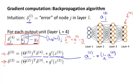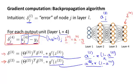Next, you apply a similar formula to compute delta two, which can be computed using a similar formula, only now using a2. It's possible to prove if you know calculus that this expression is equal to mathematically the derivative of the activation function g prime. And finally, there is no delta one term, because the first layer corresponds to the input layer, and that's just the features we observed in our training set, so that doesn't have any error associated with it. We have delta terms only for layers two, three, and four in this example.